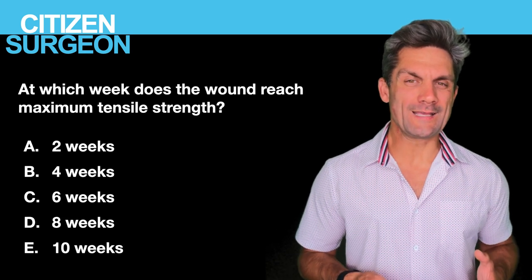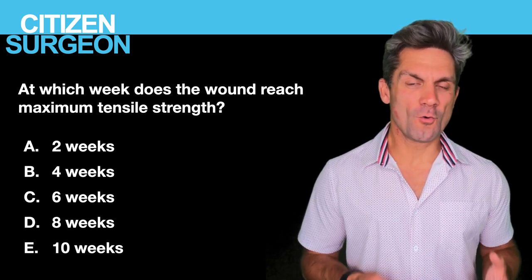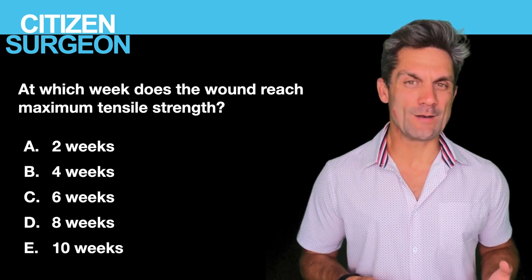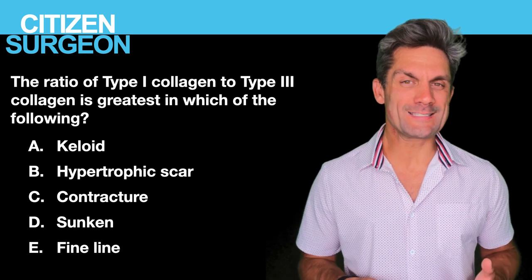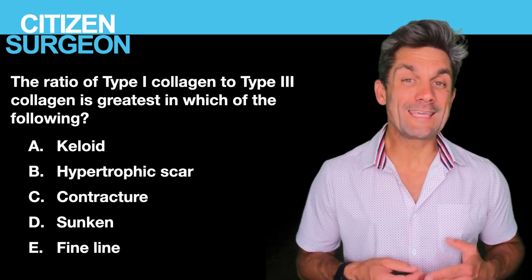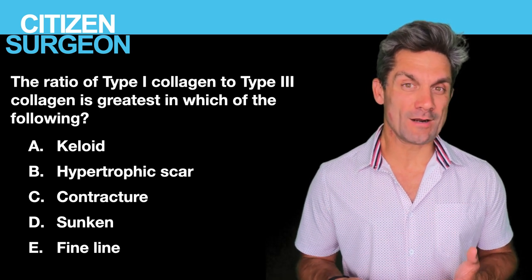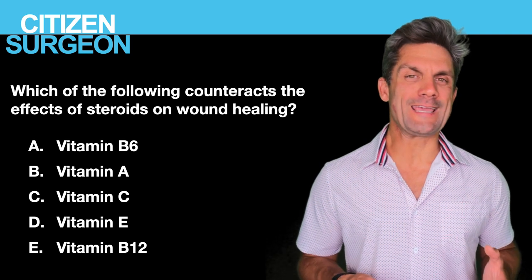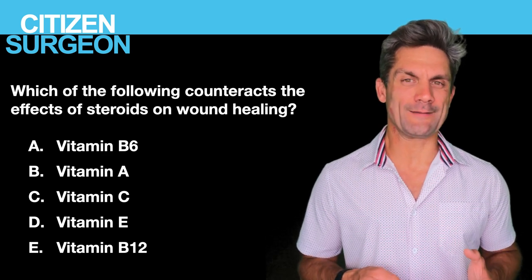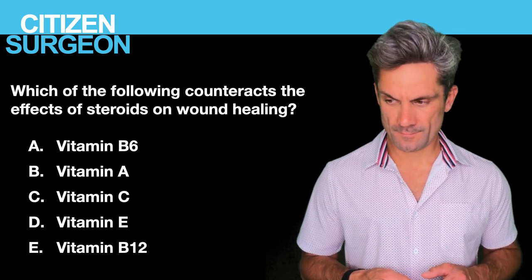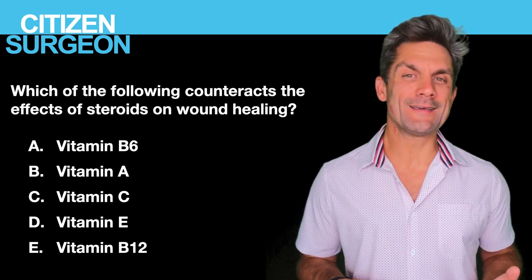Question eleven: at what week does the wound have the maximal tensile strength during healing? Is it two, four, six, eight, or ten weeks? Question twelve: the ratio of type one collagen to type three collagen is greatest in which of the following types of scars? Is it a keloid scar, a hypertrophic scar, a contracture, a sunken or pitted scar, or a fine line scar? Bonus question thirteen: which of the following counteracts the negative effects of steroids on wound healing? Is it vitamin B6, vitamin A, vitamin C, vitamin E, or vitamin B12?